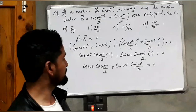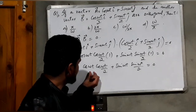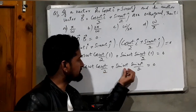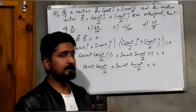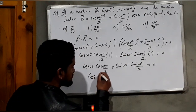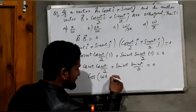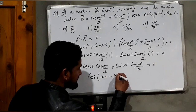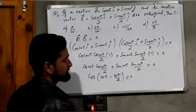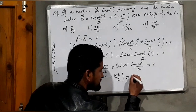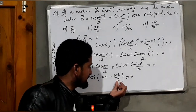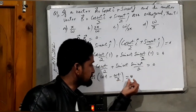Using the trigonometric identity from mathematics: cos(a)·cos(b) + sin(a)·sin(b) equals cos(a − b). So we can write cos(ωt − ωt/2) is equal to zero.